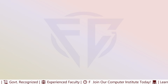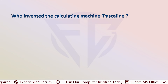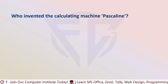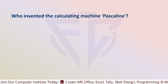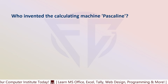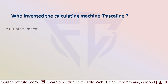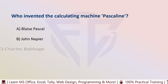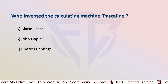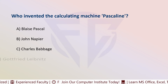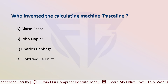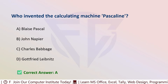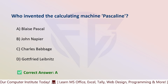The next question is: who invented the calculating machine Pascaline? Options are: A) Blaise Pascal, B) John Napier, C) Charles Babbage, and D) Gottfried Leibniz. The correct answer is A, that is Blaise Pascal.